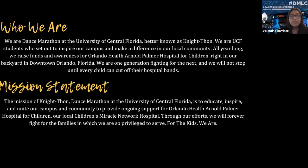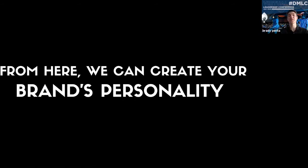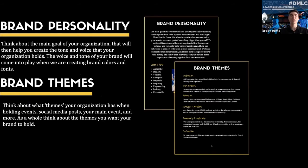Another tip is creating a slogan — it helps separate you from other programs as well. From here, we can create your brand's personality, which is basically the main goal of your organization. Once you figure out your main goal, that will help you create your tone and voice. The voice and tone of your brand will then come into play when creating brand colors and fonts. You also have to think about your brand themes — what theme your organization holds when holding events, social media posts, graphics, flyers, your main event, and so much more.